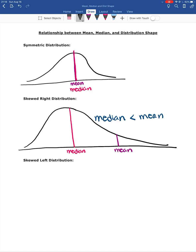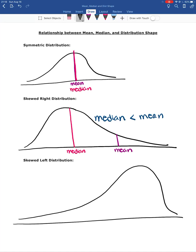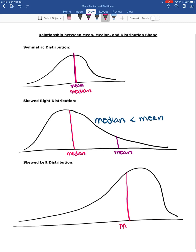In a skewed left distribution, we have a long tail on the left, and most of the data on the histogram is on the right-hand side. Just as before, the median is still in the middle of the graph. But the mean gets pulled down towards the left tail — just as it got pulled into the tail for the skewed right distribution, the mean gets pulled towards the left skew tail as well.